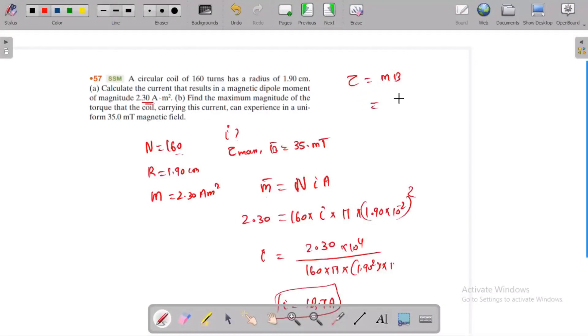The magnetic dipole moment is 2.30, and the magnetic field is 35 times 10 to the power minus 3. By doing the calculation, we get 8.05 times 10 to the power minus 2 newtons.